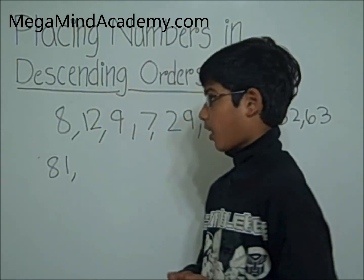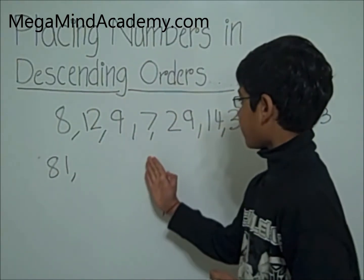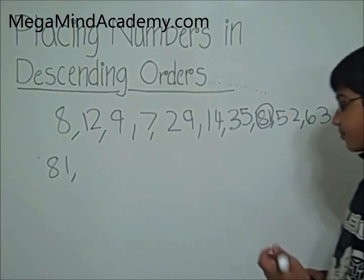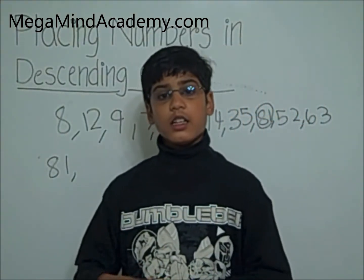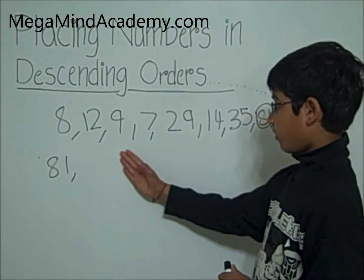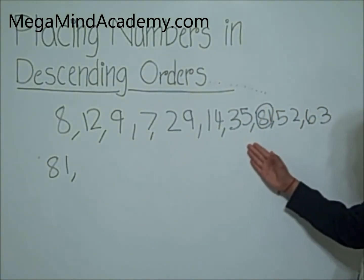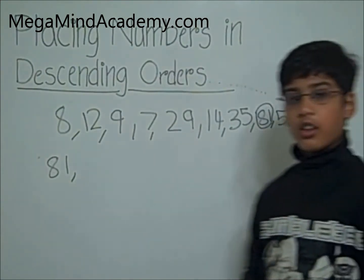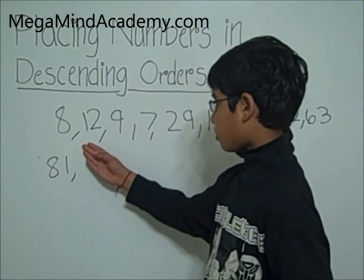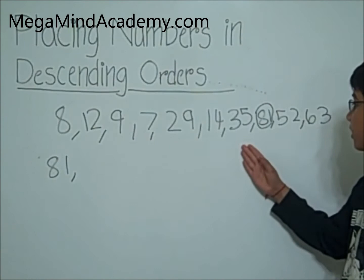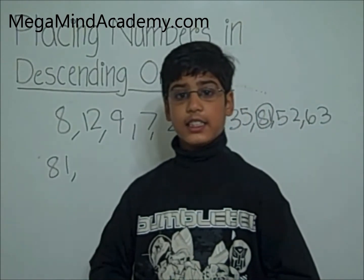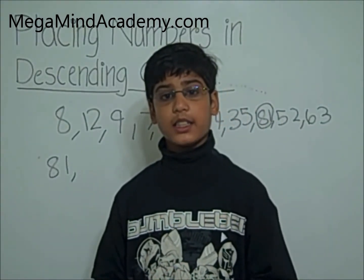Now let's find the closest number to 81. Are there any numbers from 70 to 80? Looking at 8, 12, 9, 7, 29, 14, 35, 52, and 63 — no. Are there any numbers from 60 to 70? Yes! It is 63. So 63 is going to be the next number.